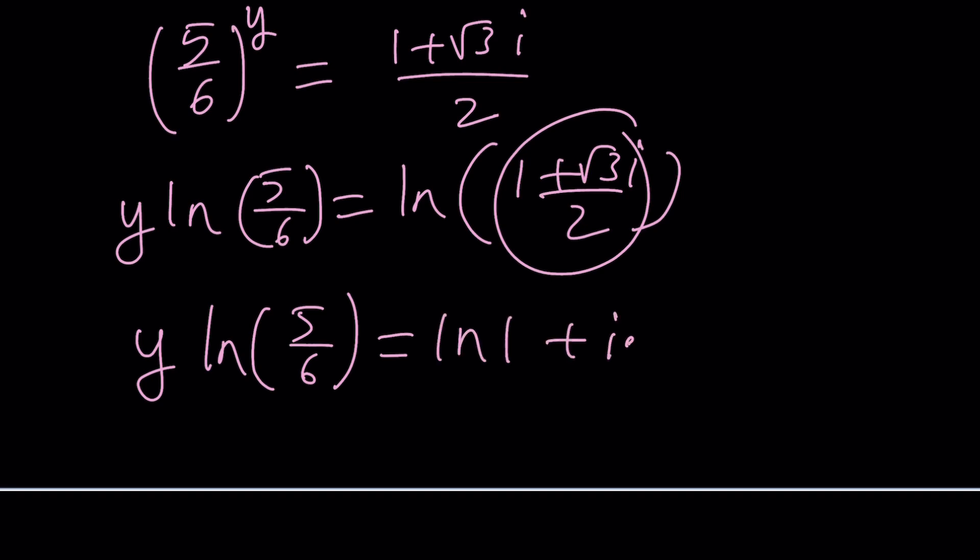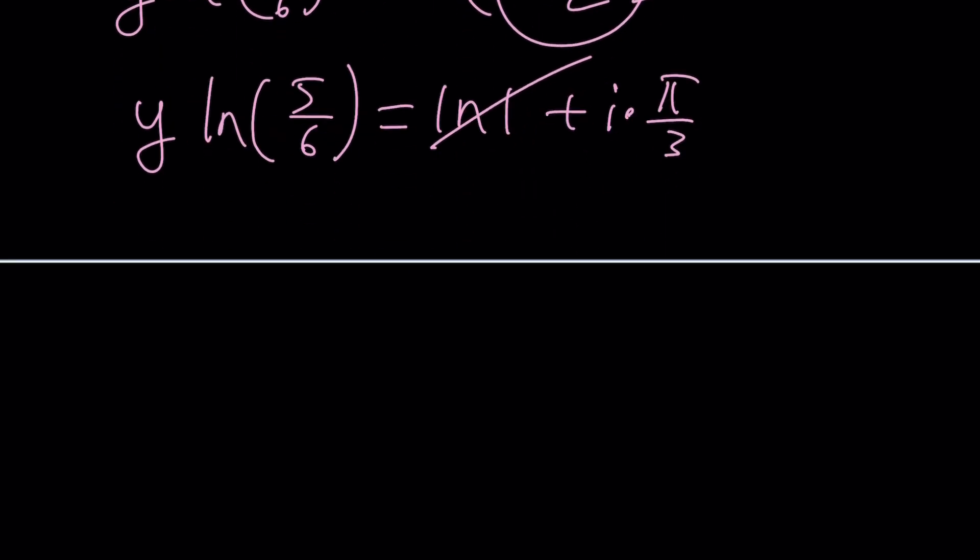So ln 1 is 0, but we can still write it. Plus i times the argument. The argument is given by tangent, which is root 3, and that will be pi over 3. This is 0. So here's the answer: y equals i pi over 3 divided by ln 5 over 6. Of course, this is one of the solutions.